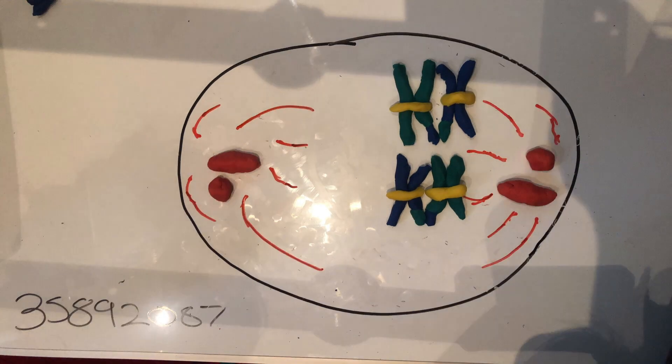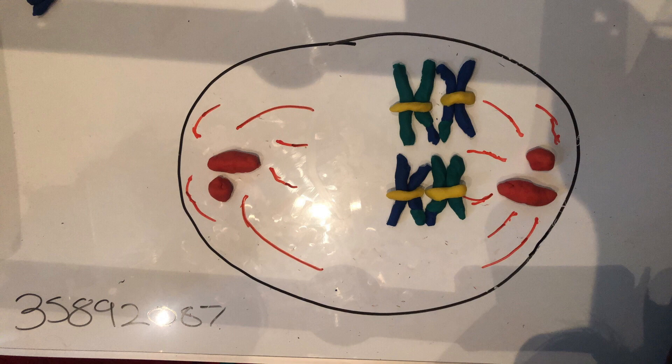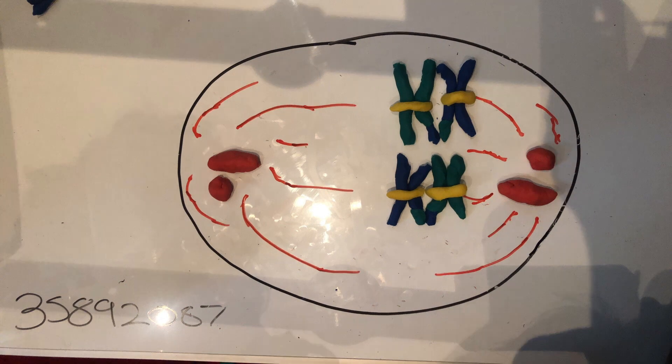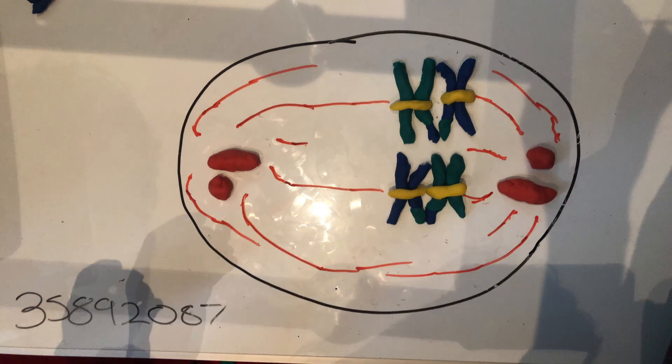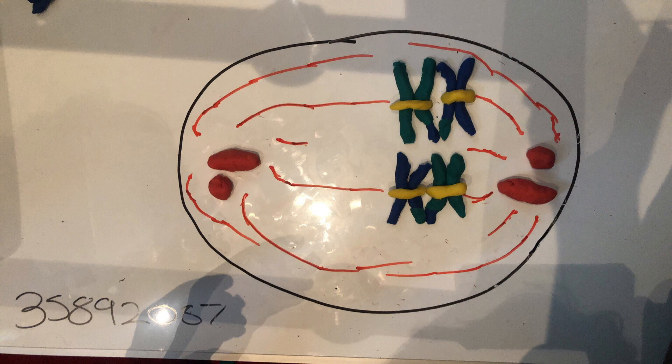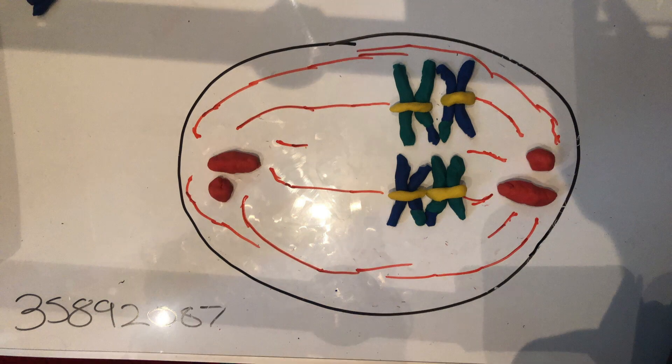In prometaphase 1, the meiotic spindle is fully formed and the sister chromatids attach to the meiotic spindle via the kinetochore, which is the complex of proteins assembled at each centromere. During this process, homologous chromosomes remain aligned so that a pair of sister chromatids is attached to only one pole by the kinetochore microtubules. Once this process is completed, we move into metaphase 1.